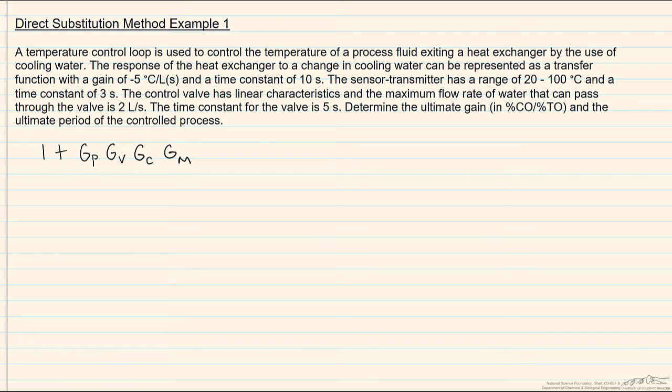Our process is given that we have a transmitter gain of negative five in degrees Celsius per liter per second, and a time constant of ten. The controller we use is recall that when we analyze using direct substitution for the ultimate gain, we always assume a P only controller. So therefore here this will be Kc, and we're looking for gain in percent controller output per percent transmitter output.